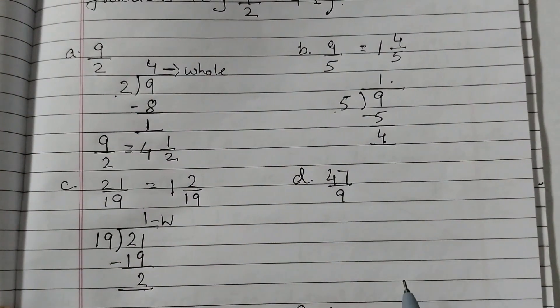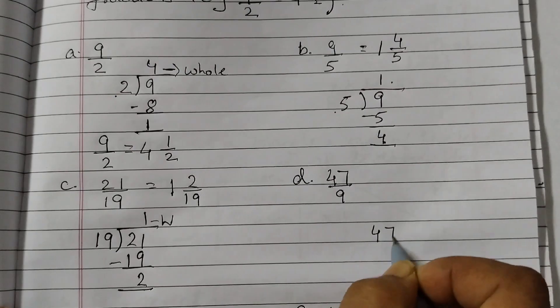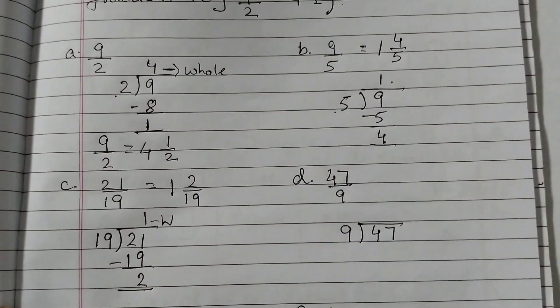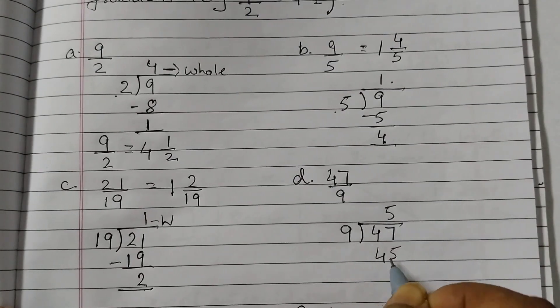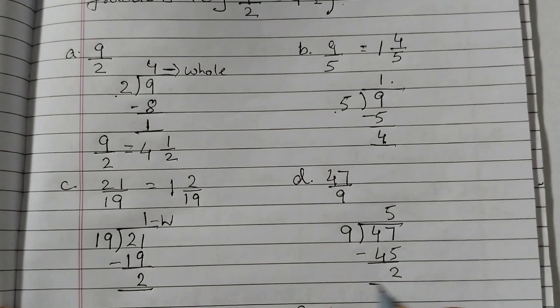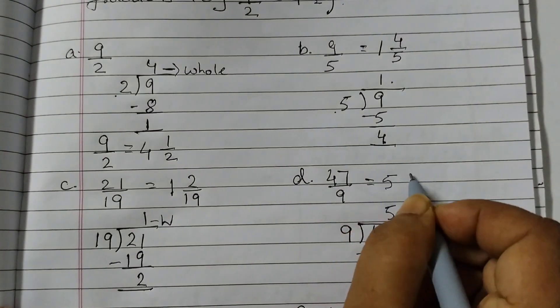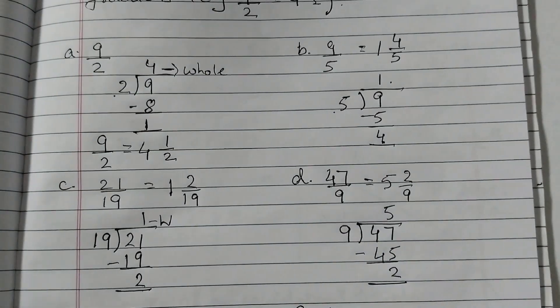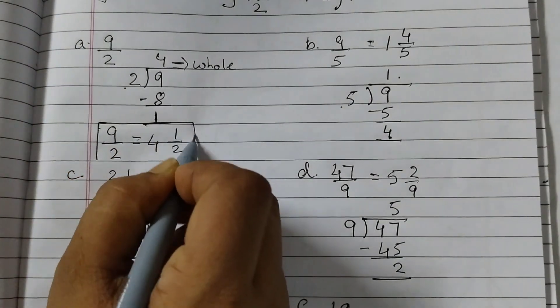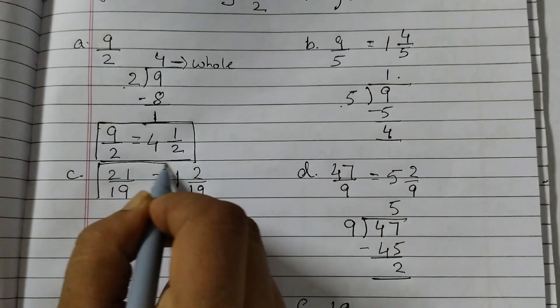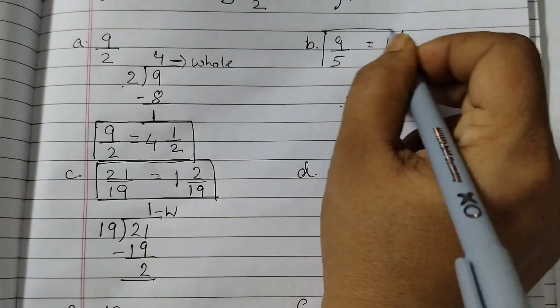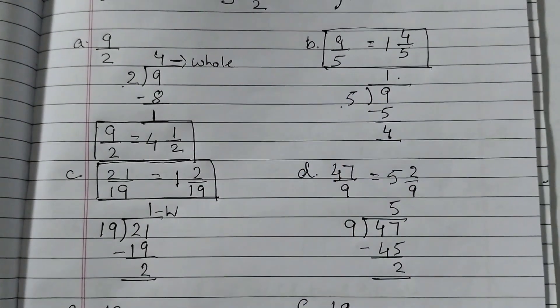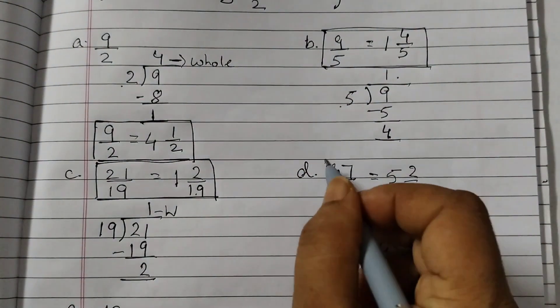47 upon 9, 47 divided by 9. We know that 9 into 5 is 45, so 9 fives are 45. 47 minus 45 is 2, so 5 whole and then 2 upon 9. So we will just box it. So this is the first one, second one, third one and then the fourth one.